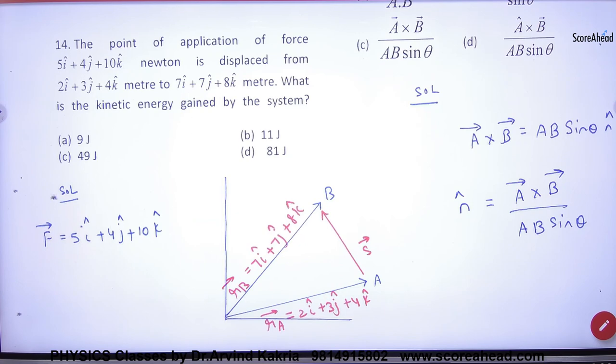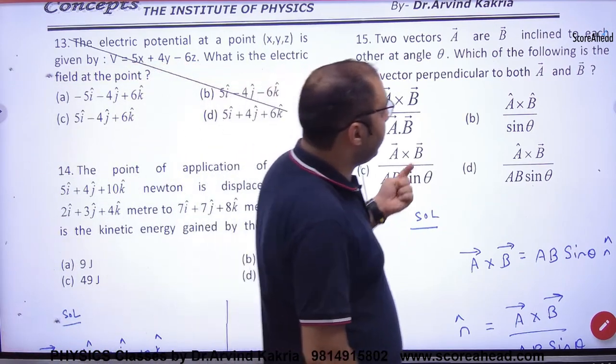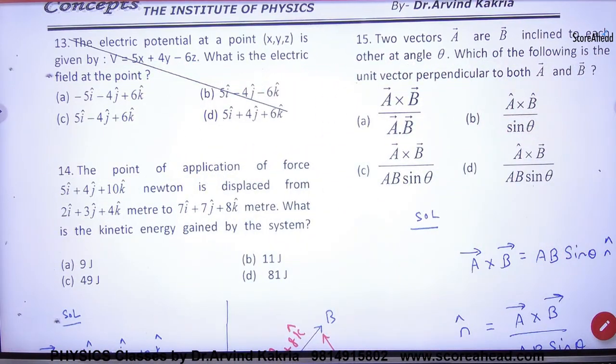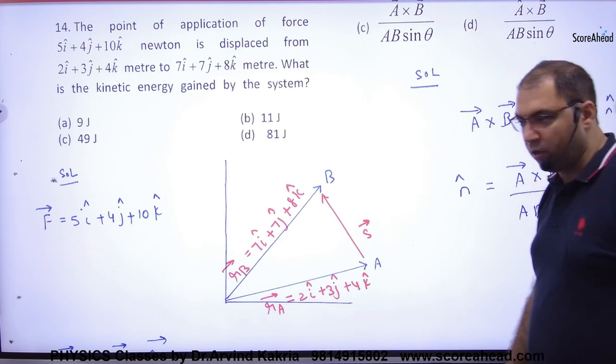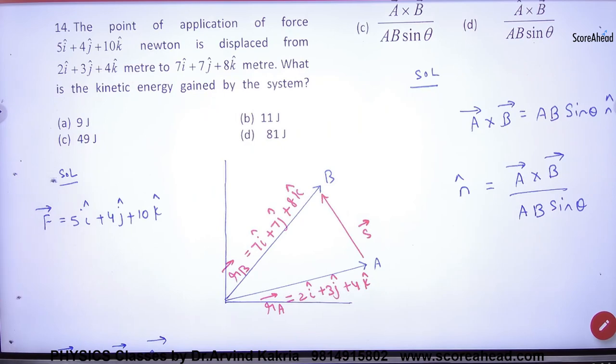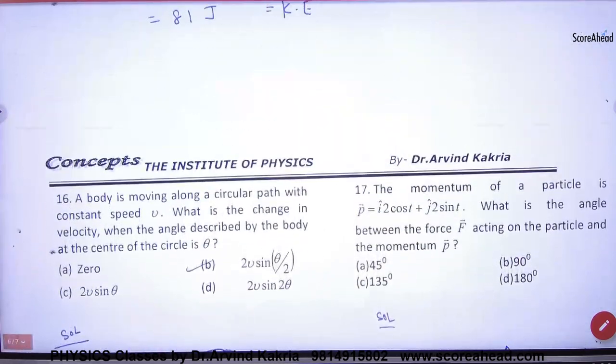Question number 14 made out. Two vectors, a vector and b vector inclined to each other at an angle theta. Which of the following is a unit vector perpendicular to both a vector and b vector? One thing tell you, there are options with cross product. What is cross product? A vector cross B vector is AB sin theta into n cap. What is n cap? Unit vector, and obviously perpendicular. So what is n cap? A vector cross B vector upon AB sin theta. This is asking n cap. So n cap is always perpendicular to A vector cross B vector. Is this point clear? We will do this next time.